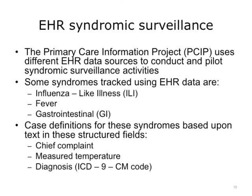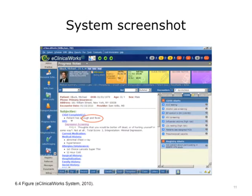The Primary Care Information Project at the New York City Department of Health and Mental Hygiene uses a number of different EHR data sources to conduct and pilot its syndromic surveillance activities. Some of the syndromes tracked using EHR data are Influenza-like Illness, Fever, and Gastrointestinal Illness. Case definitions for these syndromes are based upon text in structured fields: Chief Complaint, Measured Temperature, and Diagnosis. For example, a patient with a chief complaint of cough and fever would be identified, as these are keywords the syndromic surveillance system searches for as part of the ILI case definition. If the patient's record meets the case definition for a syndrome, that patient will be counted as a case.